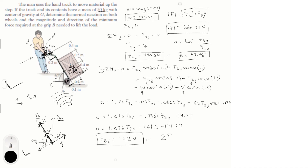The last thing to find is the reaction at A. Sum of forces in the X direction equals zero: F_A minus F_Bx equals zero, so F_A equals F_Bx, which means F_A equals 442 Newtons. Final answers: reaction at A is 442 Newtons, magnitude of F is 660.27 Newtons at 47.98 degrees, F_By is 490.5 Newtons, and F_Bx is 442 Newtons.